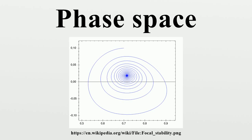Here, the horizontal axis gives the position and vertical axis the velocity. As the system evolves, its state follows one of the lines on the phase diagram.